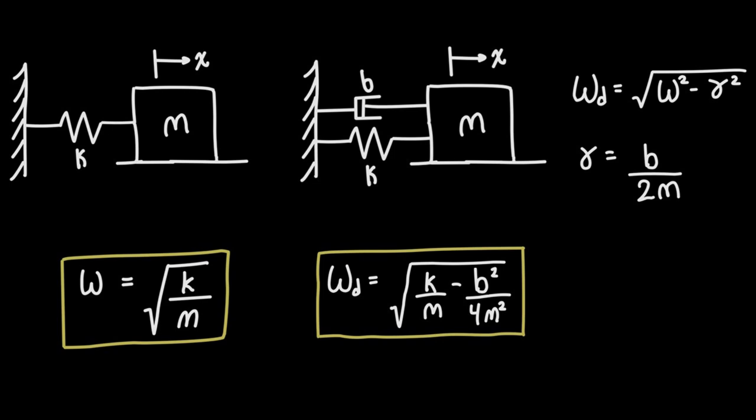We can use that to calculate our angular frequency when we have a mass, spring, and a damper. When we add a damper to the mix the amplitude of our oscillations is going to decay very quickly. It's not like the case with just the spring and the mass where once you set it into motion it keeps oscillating back and forth forever. Once you add a damper, things will come back to the equilibrium position fairly quickly.